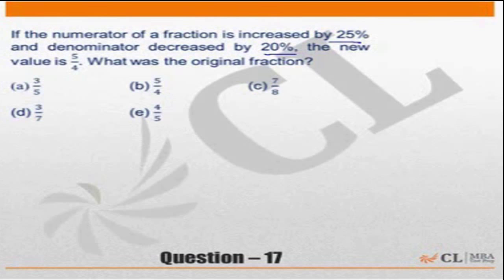The standard way of doing this question is if the original fraction is x upon y, the new fraction would be numerator increased by 25% so it becomes 1.25x, and the denominator decreased by 20% so it becomes 0.8x.